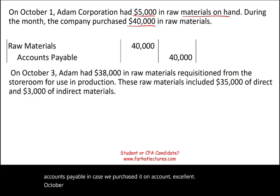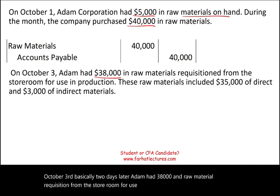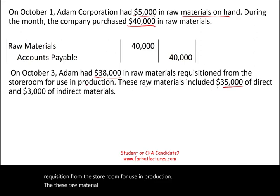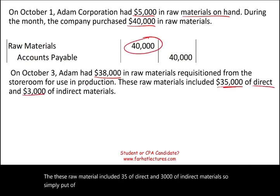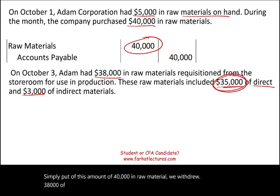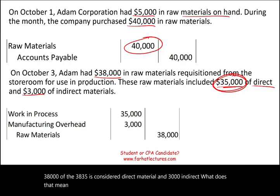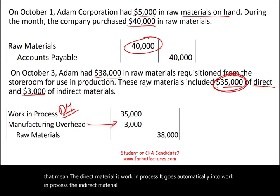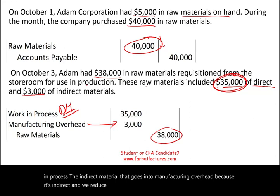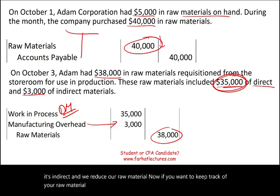October 3rd, Adam had $38,000 in raw material requisitioned from the storeroom for use in production. These raw materials included $35,000 of direct and $3,000 of indirect material. Direct material goes automatically into work in process. Indirect material goes into manufacturing overhead because it's indirect, and we reduce our raw material account — now down to $2,000.